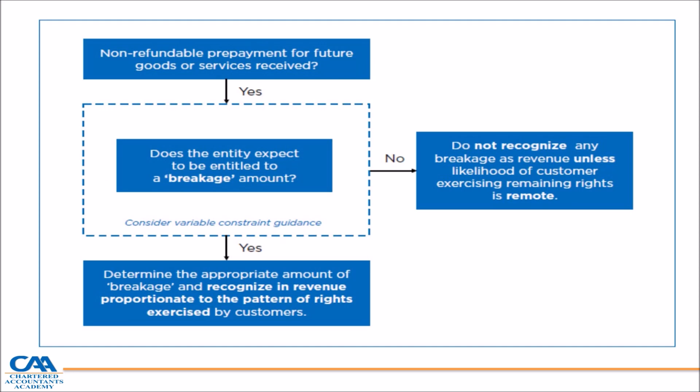Here's a mind map: does the entity expect to be entitled to breakage? If not, do not recognise breakage as revenue — you're expecting the customer will exercise. But if you don't expect the customer will exercise, you recognise breakage as revenue proportionally.